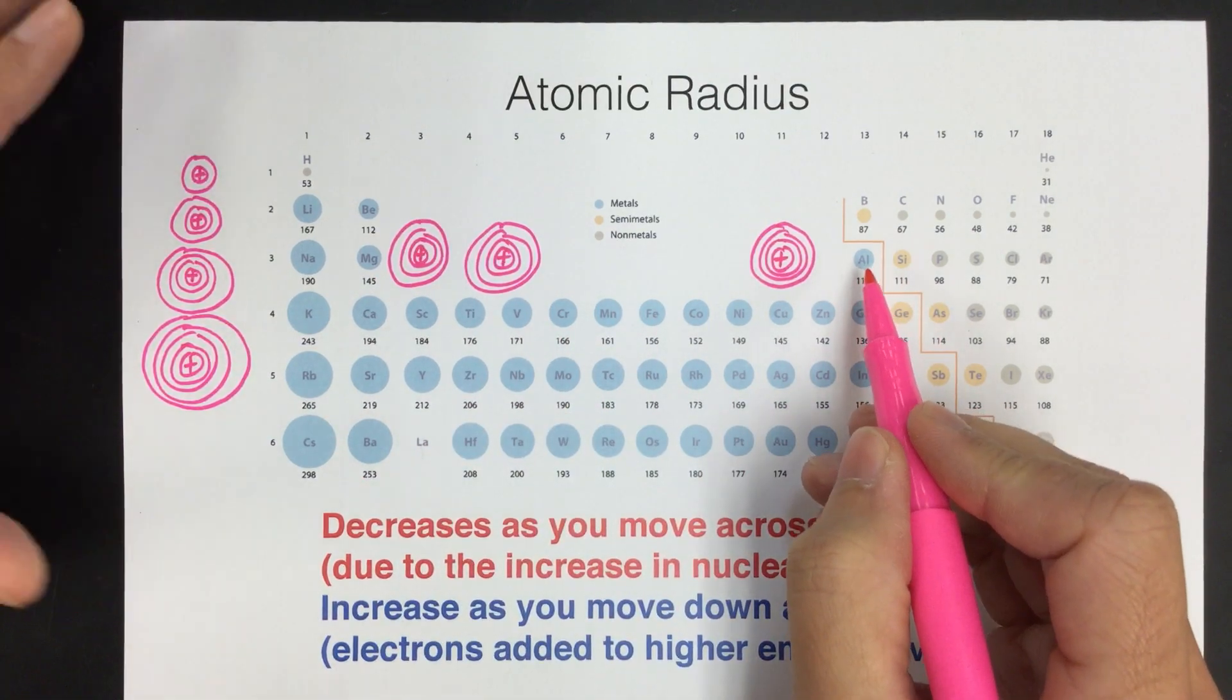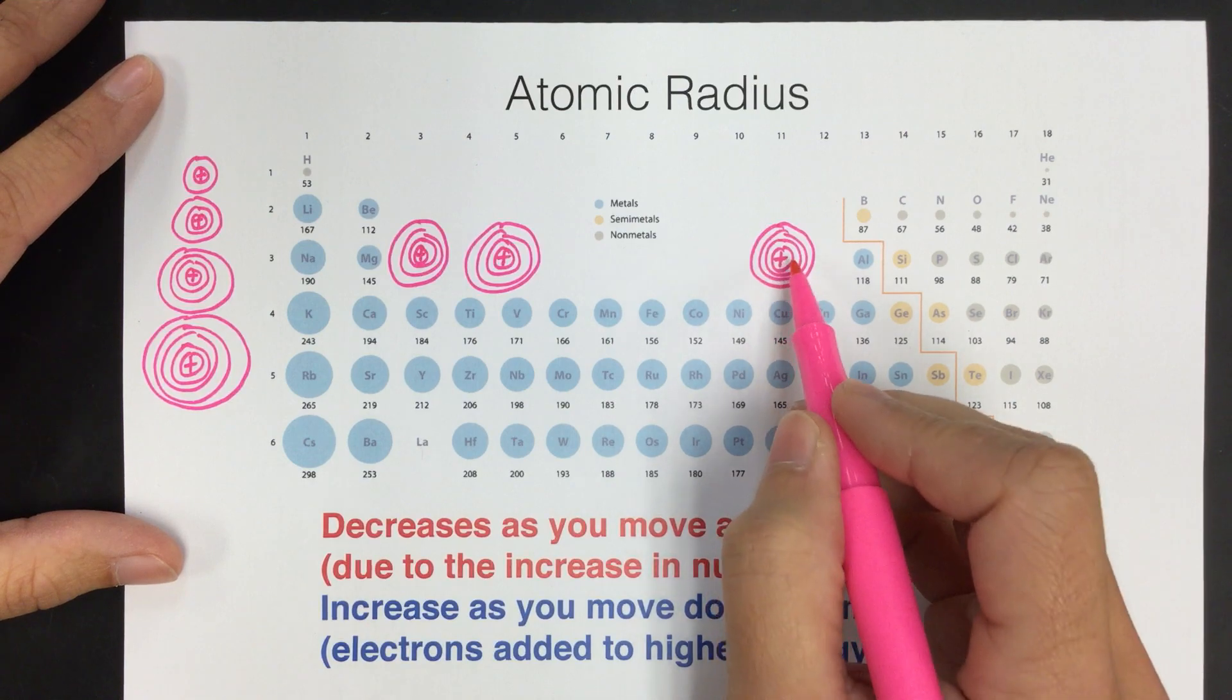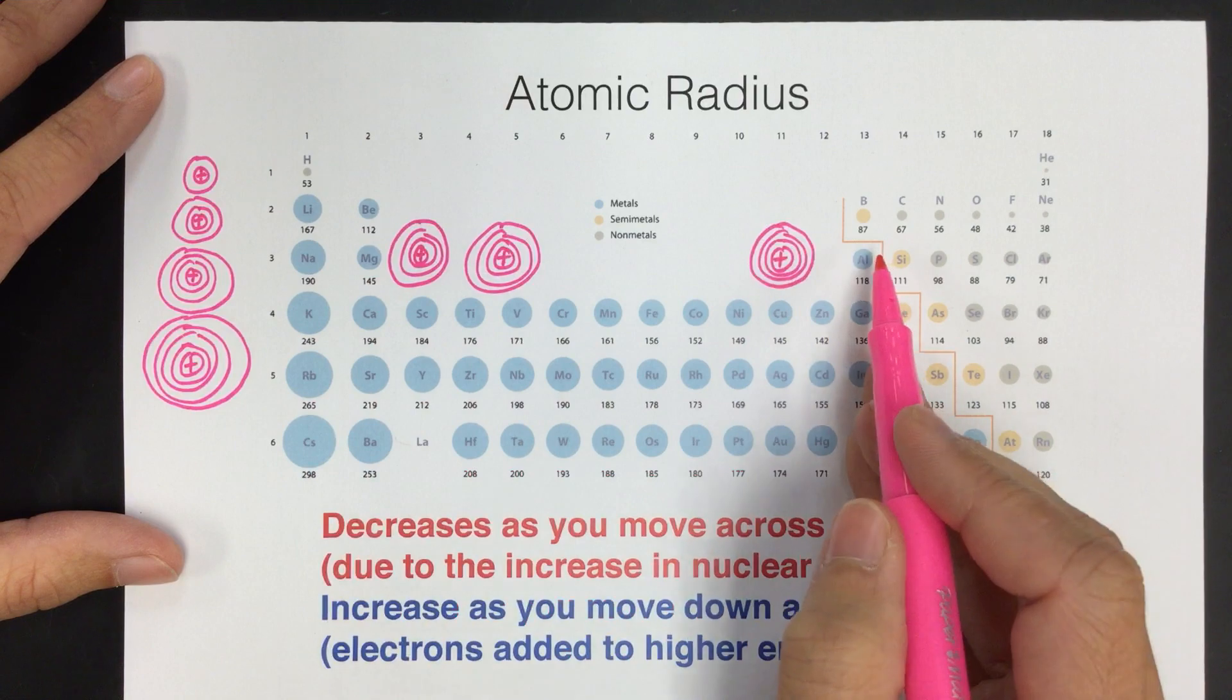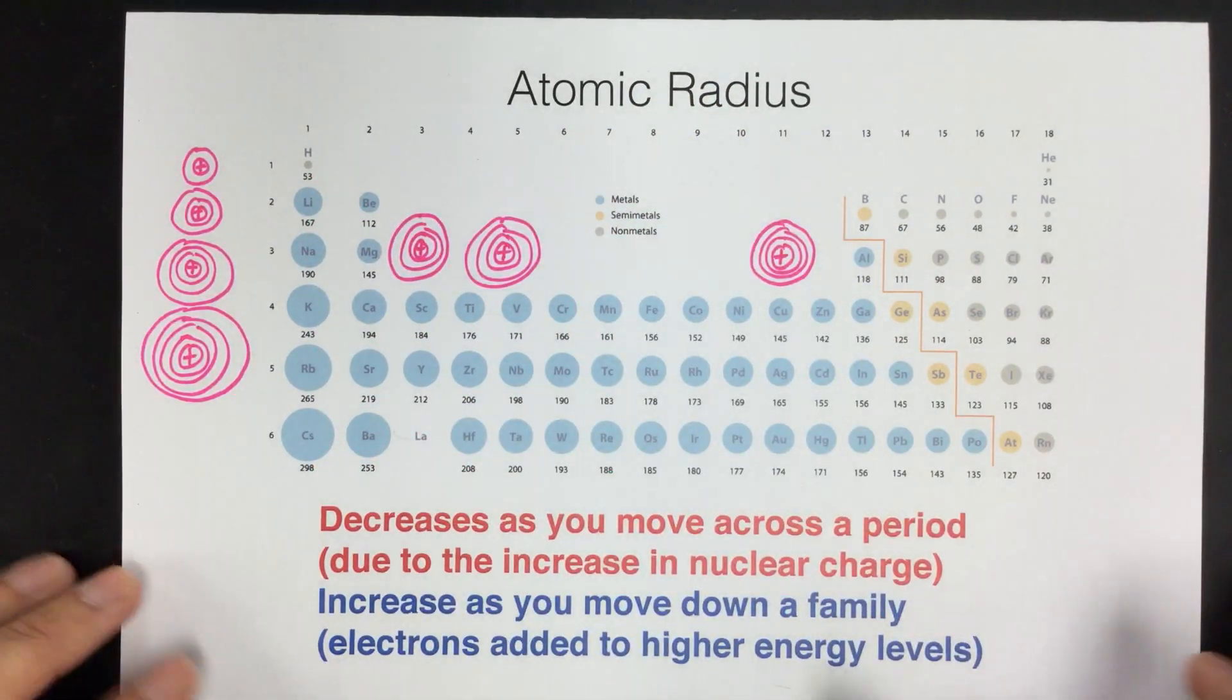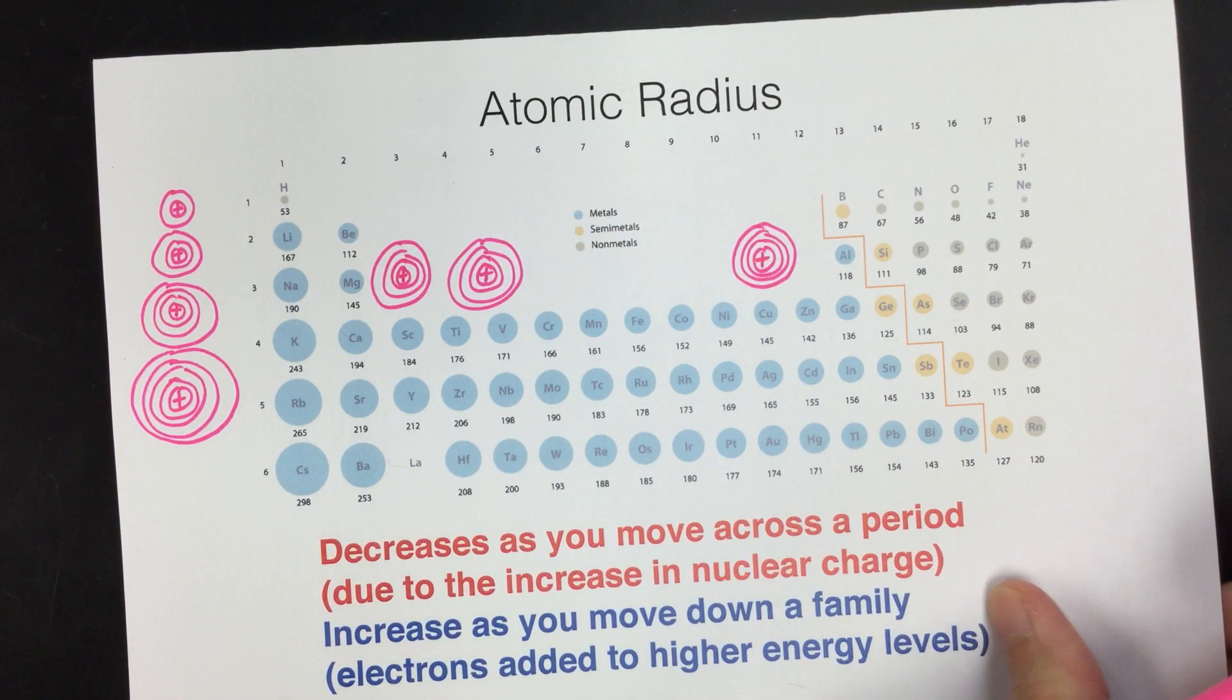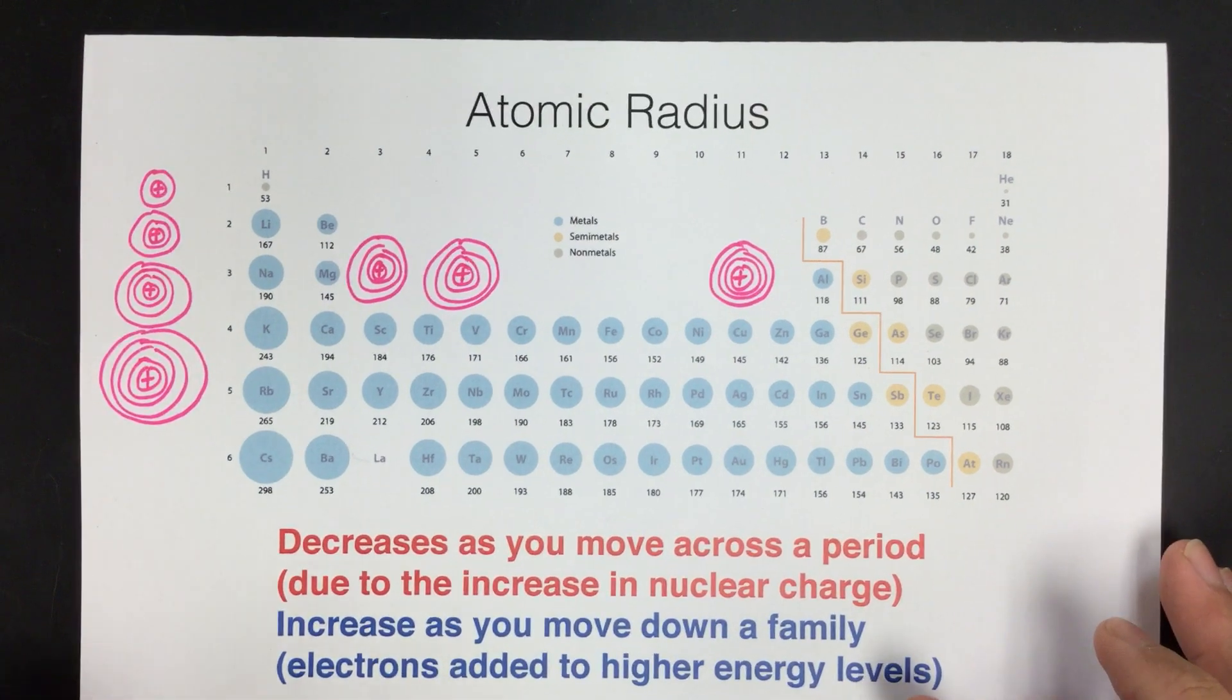However, now aluminum over here has more protons to pull those electrons in closer. So aluminum is going to be slightly smaller. And you can see as they go across, it gets smaller, but not as quickly as they get bigger as we go down. Okay, so that's the general idea with atomic radius. Let's look at some examples of how we can determine which one's the biggest or smallest given a set of atoms.